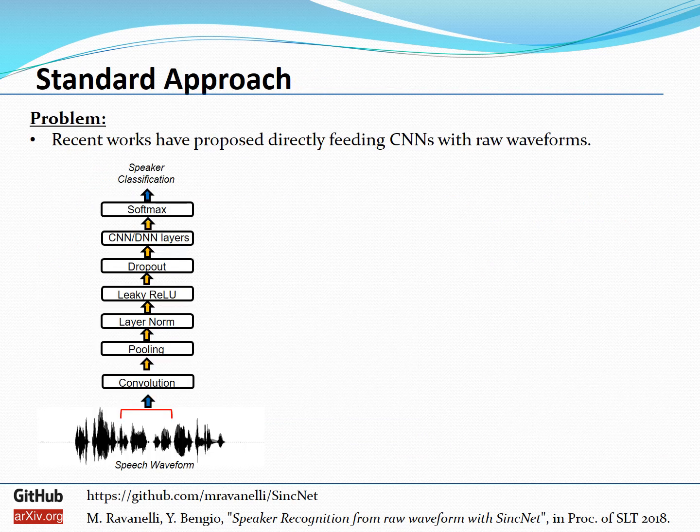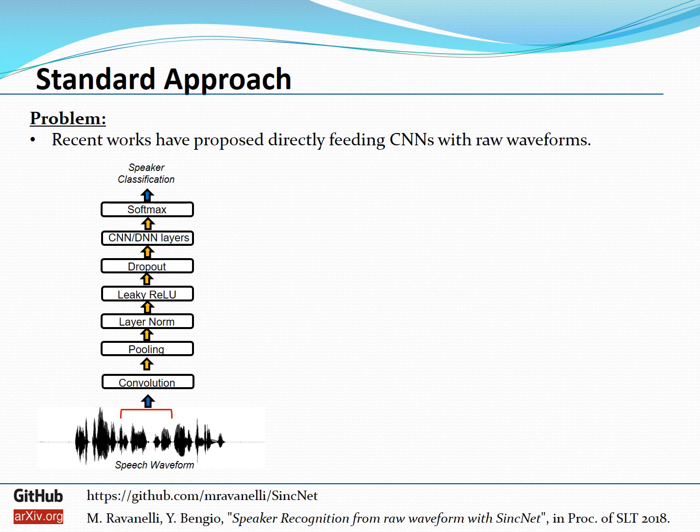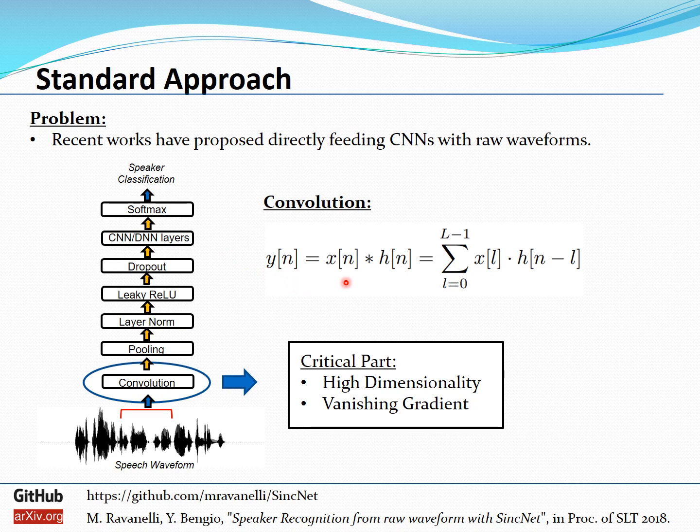To mitigate this issue several recent works have proposed to directly feed a neural architecture, typically a convolutional neural network with raw audio samples. In a standard convolutional neural network the first layer performs a convolution between the input signal and a set of filters that are learned from data. So what's the problem with that? According to me the most critical part of the architecture is the first convolutional layer. Why? First of all because the first convolutional layer has to deal with high dimensional data. As we have seen before, dealing with such high dimensional data can be very critical for a neural network. And the second big problem is that the first convolutional layer is very sensitive to vanishing gradient problem especially when we employ very deep architectures.